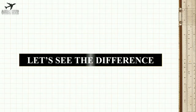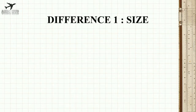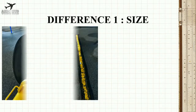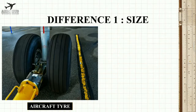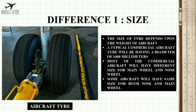Now let's see the difference between aircraft tire and car tire. Difference 1: Size. You can see an image of an aircraft tire. The size of the tire depends upon the weight of the aircraft. A typical commercial aircraft tire will have a diameter of 1400mm.